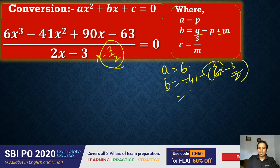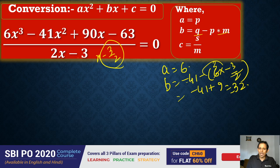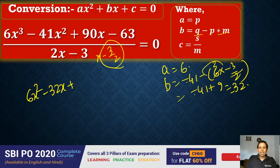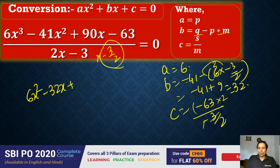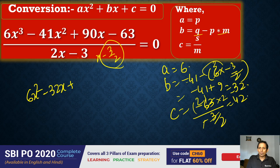So this will plus. This will equal to minus 41 and plus 9 is equal to 32, but minus. Means we can write 6x² minus 32x. Last, c is what? s by m. So s is what? Minus 63 by minus 3 by 2. So definitely this is 2. So this will be cancelled out. So that is equal to 42. So for 42, this is 42.